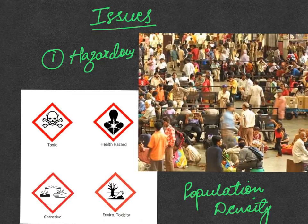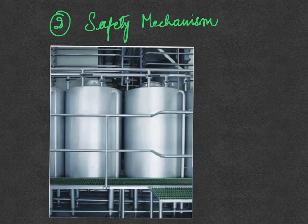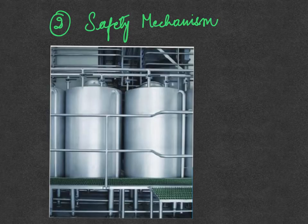The second issue with respect to this industrial disaster was the population density. The plant was located in an area where the population density was high, where the number of people residing was high. So obviously whatever consequences it has, it will affect a lot of people. The third issue is the safety mechanism. Whatever the incident, it shows that the safety storage system for storing the hazardous gas was either faulty or it was overrated. So the safety aspect was compromised.